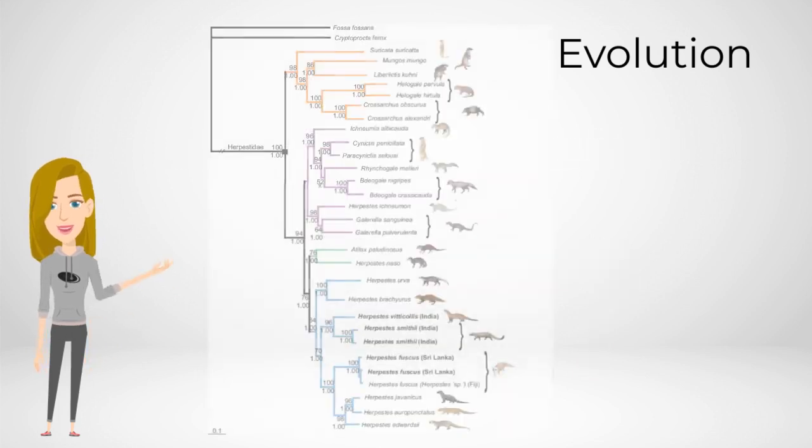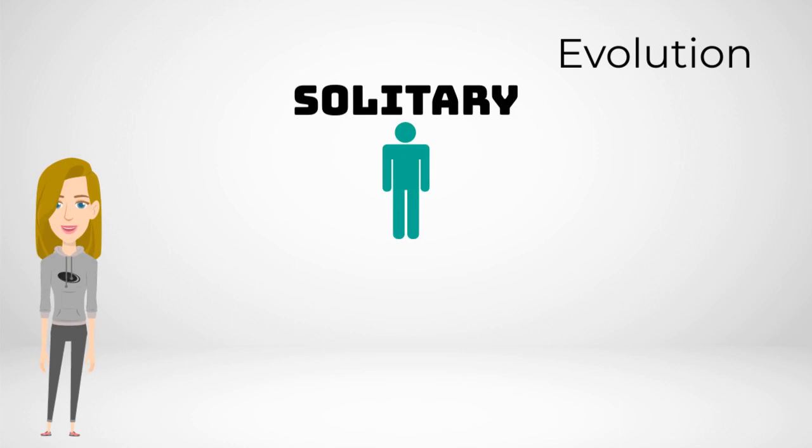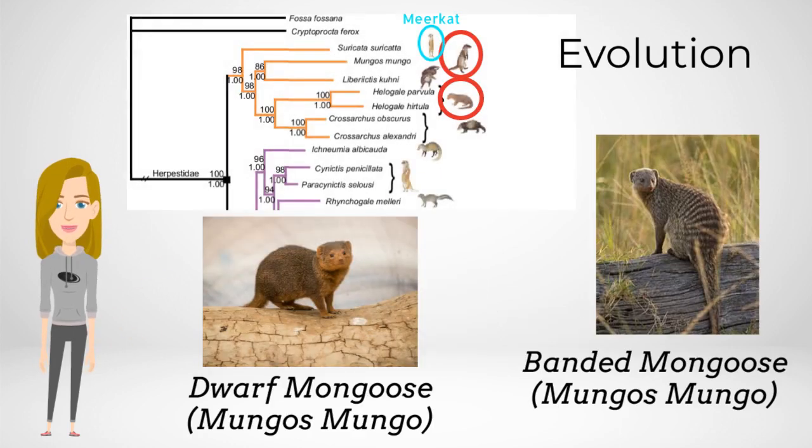If you compare meerkat to its close relatives in the mongoose family, some of these relatives prefer solitary lives and others prefer cooperative and social lives, exhibiting sentinel behaviour such as the dwarf mongoose and banded mongoose.